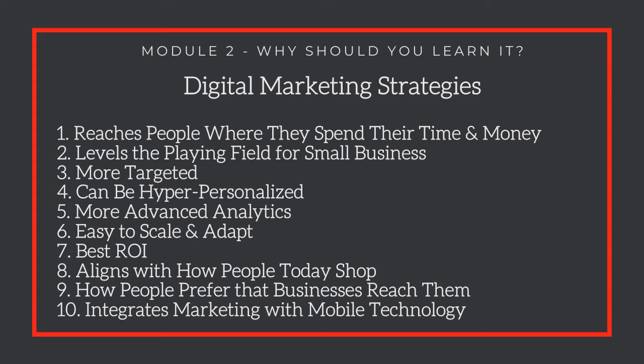Number six is easy to scale and adapt, which means that if you have one well-developed digital product in the market, you can scale it to others easily. This doesn't happen as much in the physical world — it is much more complex, for example, to export physical products to China. But digital products are much easier to scale.